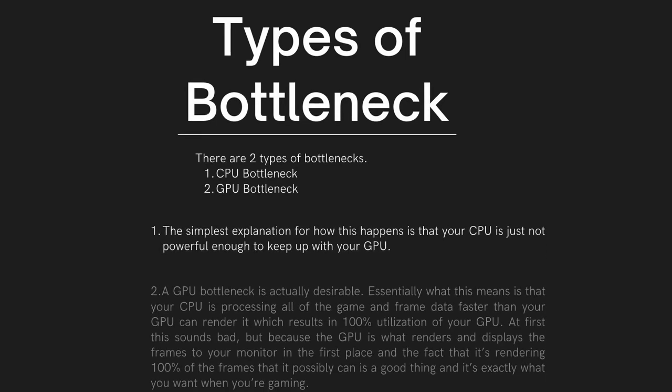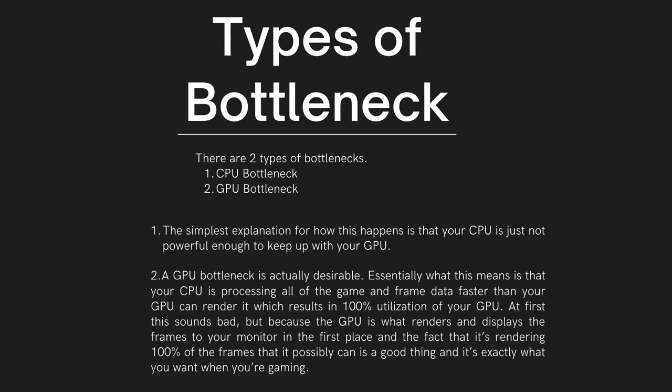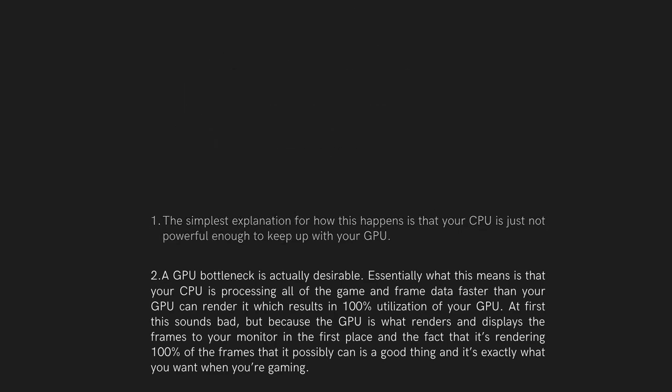There are two types of bottlenecks: a CPU bottleneck and a GPU bottleneck. The simplest explanation for a CPU bottleneck is that your CPU is just not powerful enough to keep up with your GPU. A GPU bottleneck is actually desirable — essentially what this means is that your CPU is processing all of the game and frame data faster than your GPU can render it, which results in 100% utilization of your GPU. Because the GPU is what renders and displays the frames to your monitor, having it render 100% of the frames it possibly can is a good thing and exactly what you want when gaming.